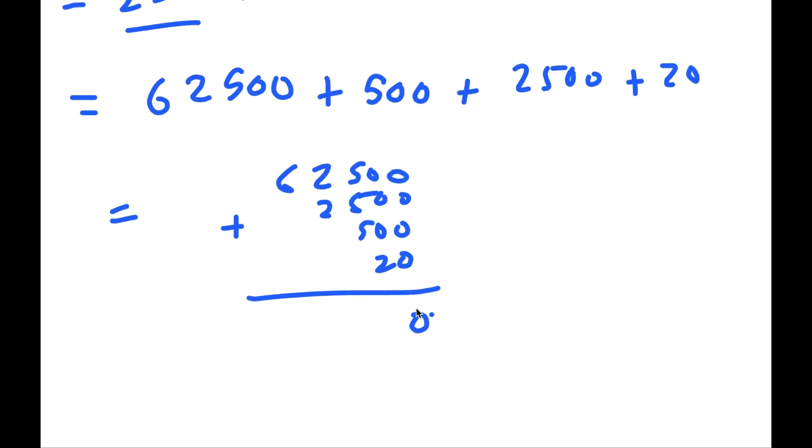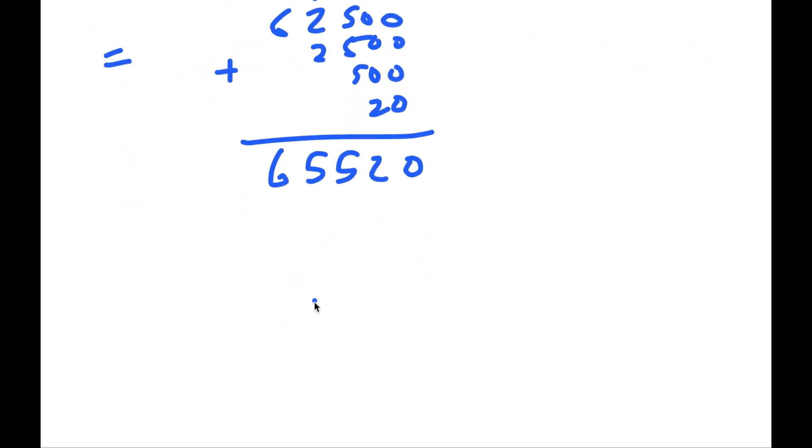So if I add all of these up, 0 plus 0 plus 0 is 0, 5 plus 5 plus 2 is 12, carry the 1, 2 plus 5 plus 5 is 12, 4 plus 1 is 5, and I have a 6 at the end. So I'm left with 65,520.